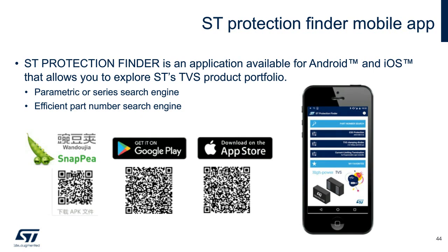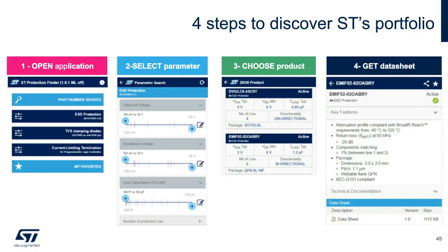ST Protection Finder is a software application available for Android and iOS that allows you to explore ST's protection portfolio. You can easily define the device that best fits your application using the parametric or series search engine, and find your product through the part number search engine. To find the right device for your application, open the ST Protection Finder app on your phone, enter the product family — for example, ESD protection — then narrow the parameters needed for your application and select from the preselected devices the best fitting product for your needs. Web links to the data sheet and online documentation are also reachable through this app. Thank you for listening. This is the end of our webinar and we can proceed to the Q&A session.